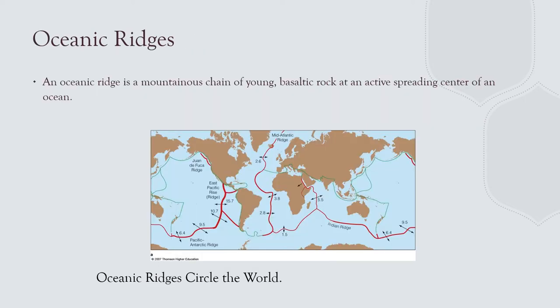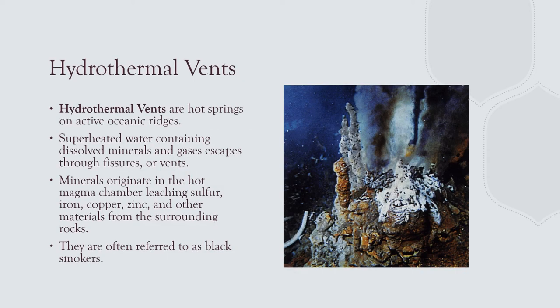Moving on to the deep ocean floor, the first feature is spreading centers. The fastest spreading area is almost 16 centimeters per year; slow areas spread about 1.5 centimeters per year. Where you have spreading, you have subduction. Hydrothermal vents are really cool because entire ecosystems surround them. They're referred to as black smokers because the gases coming out are rich in hydrogen sulfide, which is black — so it looks like black smoke, although it's minerals pouring out.